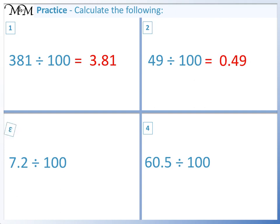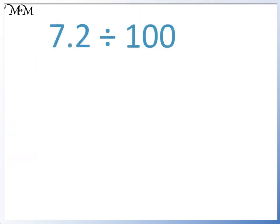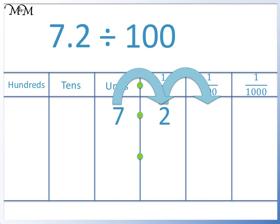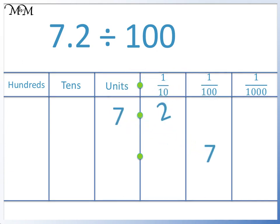Question 3: 7.2 divided by 100. Starting with the 7, we move two places to the right. We move the 7 to the hundredths column, and we move the 2 to the thousandths column. We write a 0 in the units column and in the tenths column. 7.2 divided by 100 equals 0.072.